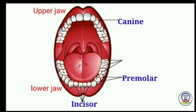Humans have four types of teeth. The first type is incisors. Incisors are chisel-shaped sharp teeth at the front of the mouth. There are eight incisors — four each in the upper and lower jaw. They help to cut and bite food.